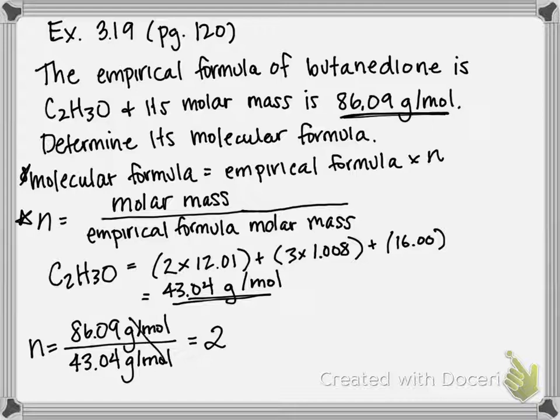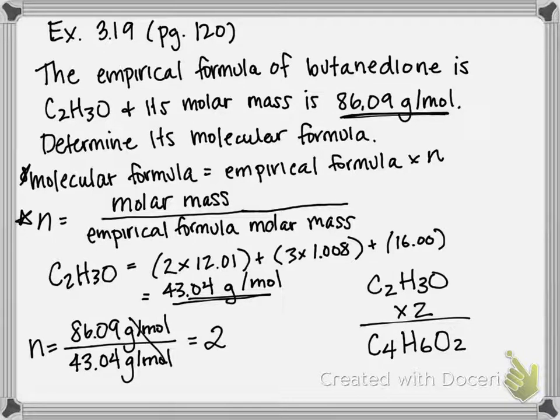So now to figure out the molecular formula, you take the empirical formula, C2H3O, multiply that by 2, and you get C2 times 2, C4, H3 times 2 is H6, and O1, that's an understood 1, times 2 is O2.